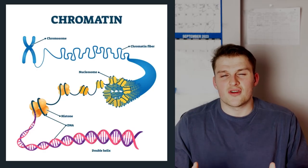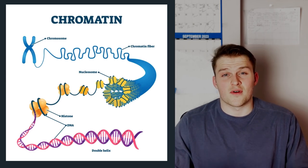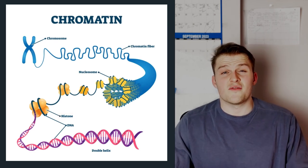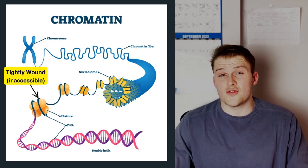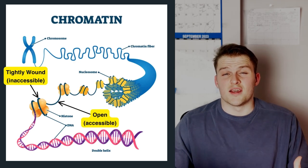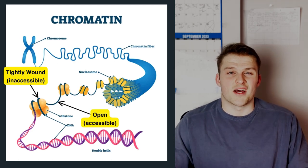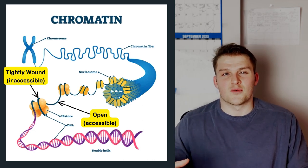Inside our cells, DNA doesn't just float around willy-nilly. Instead, it's organized into a structure called chromatin. Chromatin is an intricate assembly of DNA wrapped around protein complexes called nucleosomes, which are primarily made up of histone proteins. While some areas of chromatin are tightly wound and impenetrable, others are more relaxed and accessible. The open regions are like the bustling hubs of our city, where the DNA's machinery and proteins can come in and interact with the DNA.